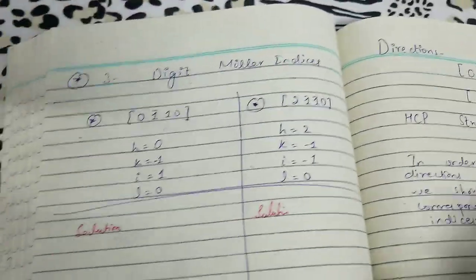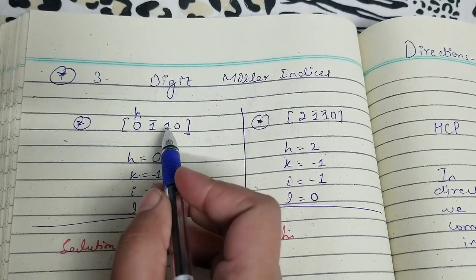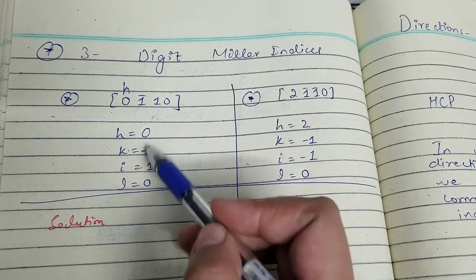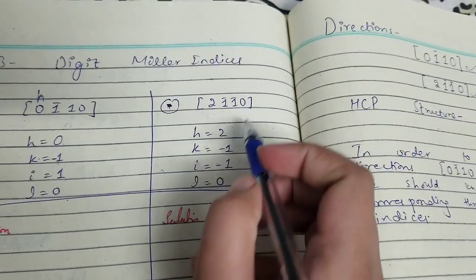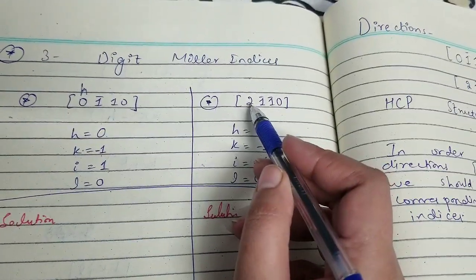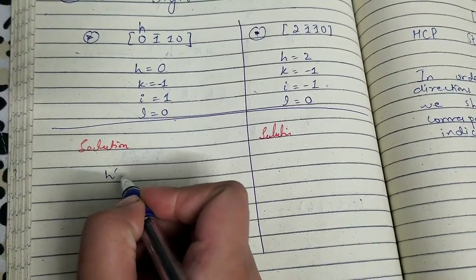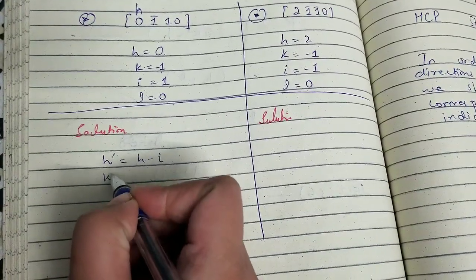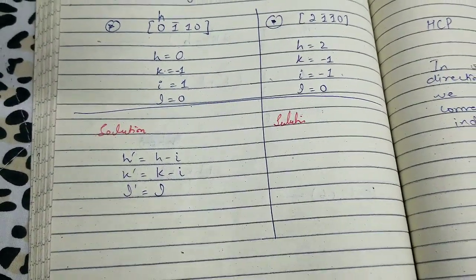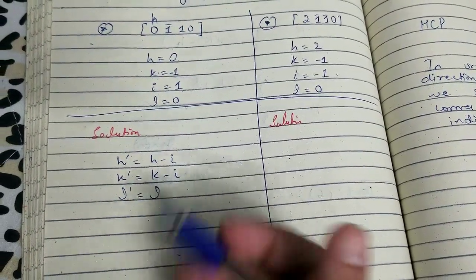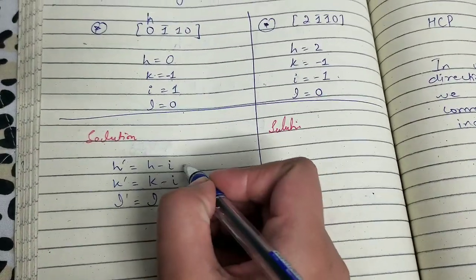In four-digit Miller indices, the first index is h, the second is k, the third is i, and the fourth is l. A bar means negative of that number. So for the first direction [0 1̄ 1 0]: h=0, k=−1, i=1, l=0. For the second direction [2 1̄ 1̄ 0]: h=2, k=−1, i=−1, l=0. The transformation equations are: h′ = h − i, k′ = k − i, and l′ = l, as derived in part A.